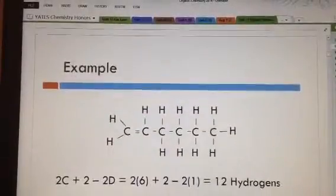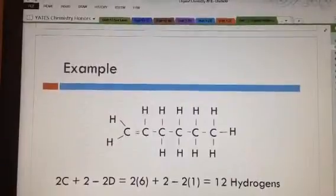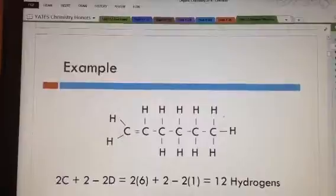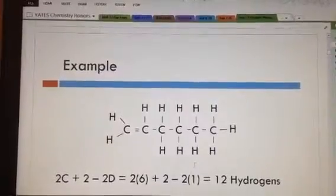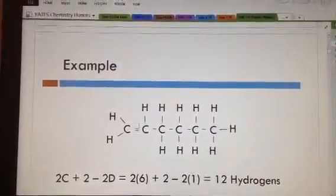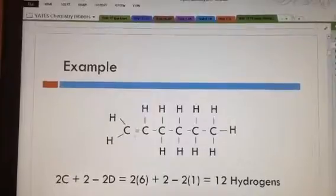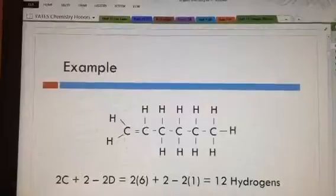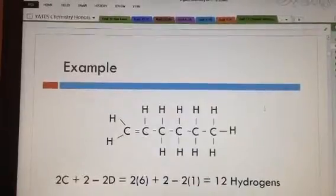Here's an example of what it looks like. You've got one, two, three, four, five, six. So that makes it hex, and there's a double bond here. So it would be hexene. You have to tell the reader where the double bond is. So this would be one hexene.